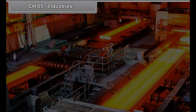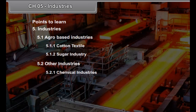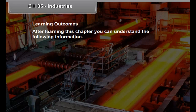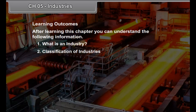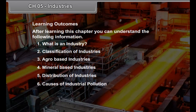Chapter 5: Industries. Points to learn: 5.1 Agro-Based Industries including Cotton Textile and Sugar Industry; 5.2 Other Industries including Chemical, Automobile and Electronic Industries; 5.3 Industrial Pollution. Learning outcomes include understanding what an industry is, classification of industries, agro-based industries, mineral-based industries, distribution of industries and causes of industrial pollution.